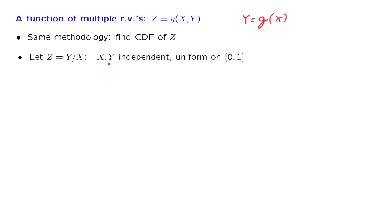Let us illustrate this methodology with a simple example. Suppose that x and y are independent random variables, and each one of them is uniform on the unit interval. We're interested in the random variable, which is defined as the ratio of y divided by x. So we will now calculate the CDF of z and then differentiate.